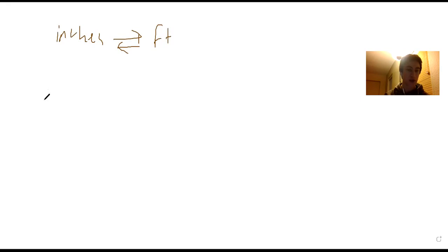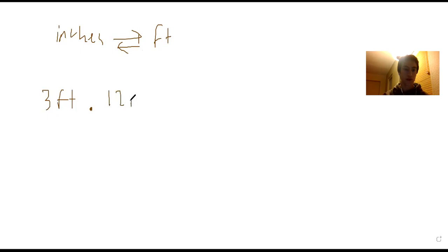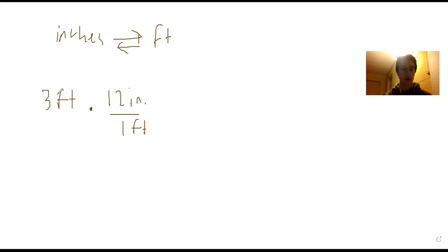So if they give us 3 feet and they want you to convert that into inches, we know that there are 12 inches in one foot. We set it up so that the feet unit cancels out — 3 feet times 12 inches over 1 foot — and we're left with 3 times 12 inches, which is 36 inches.